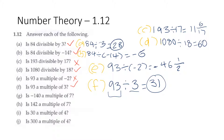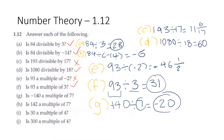Part g: is negative 140 a multiple of 7? We do negative 140 divided by 7, which gives us negative 20. So that means negative 20 times 7 is equal to negative 140. So negative 140 is a multiple of 7.